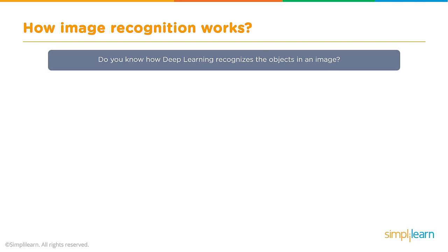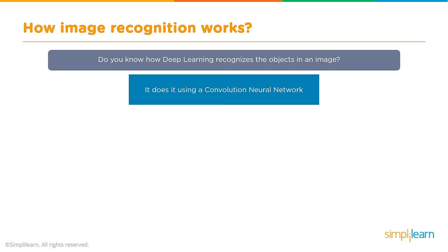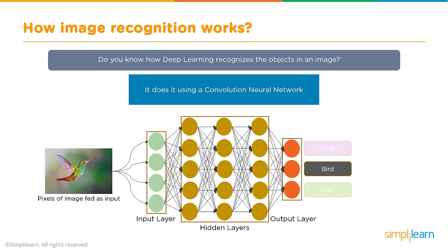Do you know how deep learning recognizes objects in an image? This particular neural network is how image recognition works — it's one of the biggest building blocks for image recognition. It does this using a convolutional neural network. Here we have a basic picture of a hummingbird. Pixels of an image are fed as input into the input layer, then through hidden layers, and finally to an output layer that says 'it's a bird.'